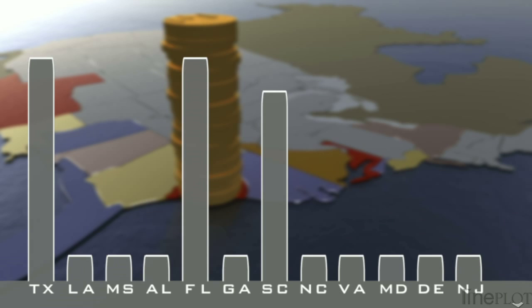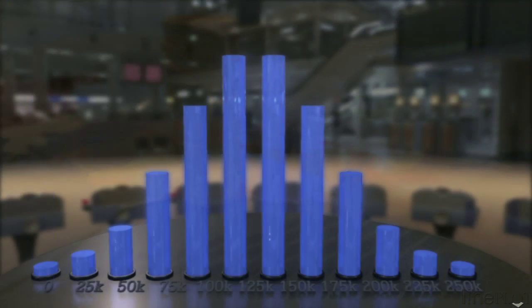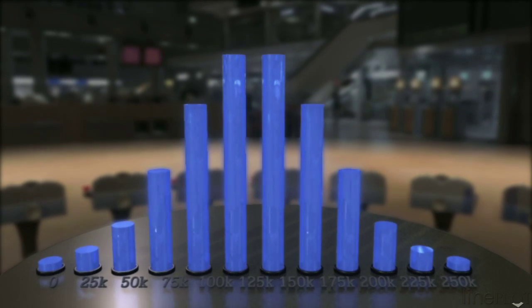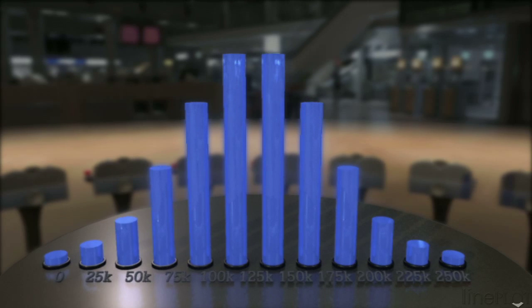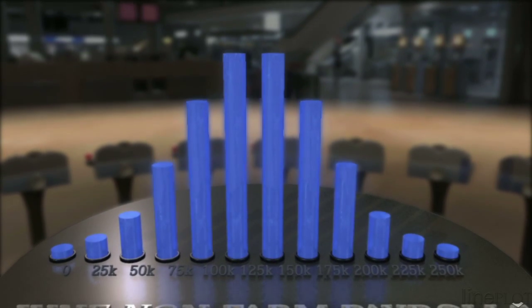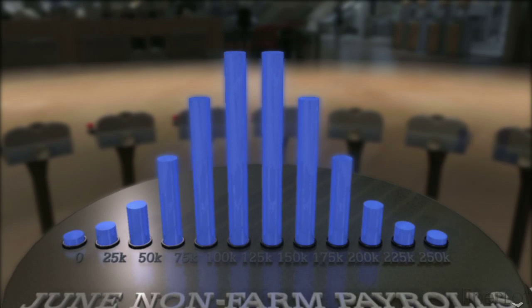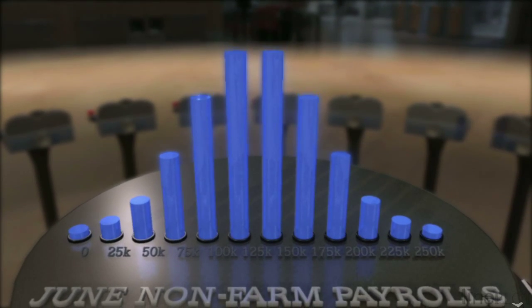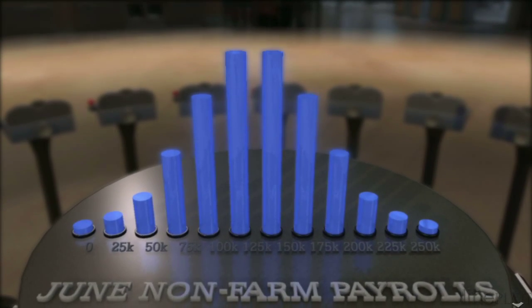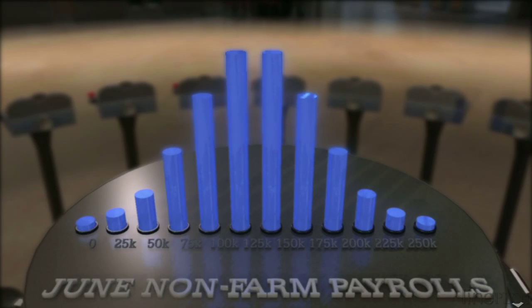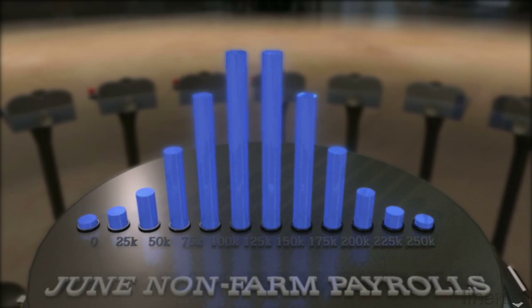The example we've just shown demonstrates parimutual trading in a very simple context. The Longitude Auction Platform supports standard option contracts with limit prices. To show this in action, we'll demonstrate a derivatives market on an economic statistic — in particular, the June non-farm payroll announcement. The initial auction prices show a normal distribution around an expected outcome. Call and put options are offered on a set of strikes chosen based on economists' forecasts.